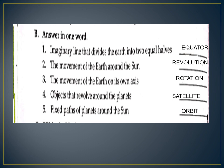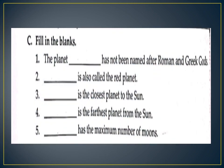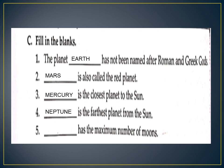Fill in the blanks. Question 1: The planet dash has not been named after Roman and Greek gods — answer: Earth. Question 2: Dash is also called the red planet — answer: Mars. Question 3: Dash is the closest planet to the sun — answer: Mercury. Question 4: Dash is the farthest planet from the sun — answer: Neptune. Question 5: Dash has the maximum number of moons — answer: Jupiter.